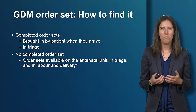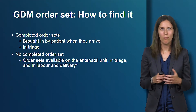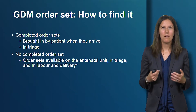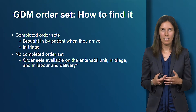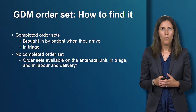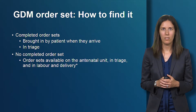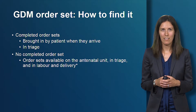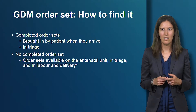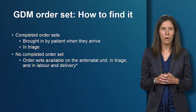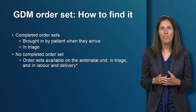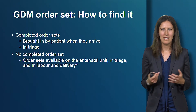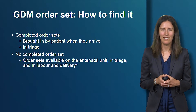Next, we'll discuss the patient order set for gestational diabetes and how to find it. The order set may already be completed and brought in by the patient on arrival, or a completed copy may be available in triage. If no completed order set exists, order sets are available on the antenatal unit, in triage, and in labor and delivery. Note that this may change as the hospital moves to an electronic system, so please check with your unit supervisors and educational leads.